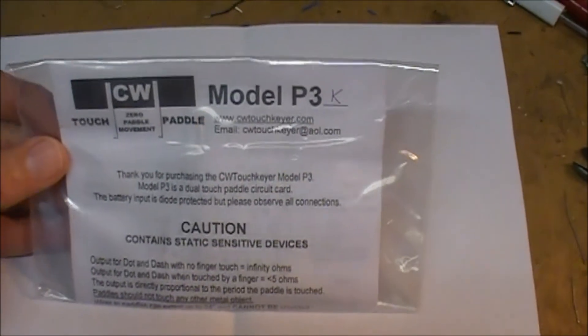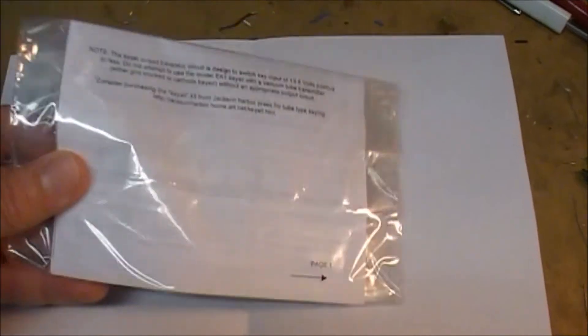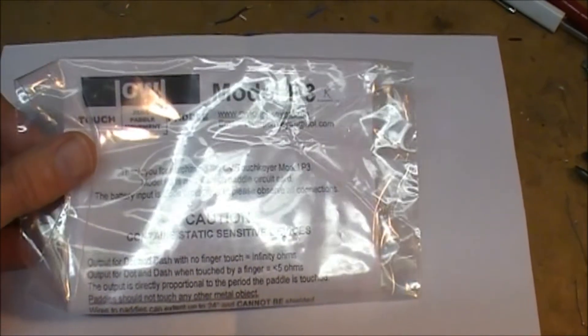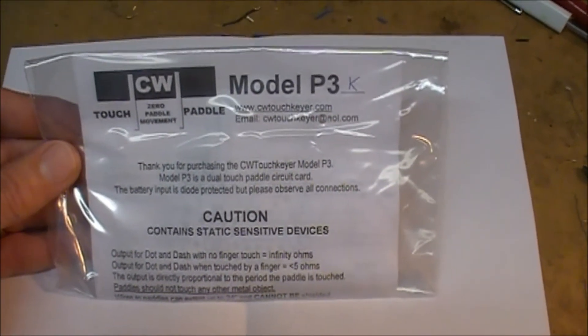Once the box is open, the kit, as you can see, comes inside a cellophane sleeve. It does have some static-sensitive parts in it, and we'll take a look at exactly what those static-sensitive parts are and open up the instructions.